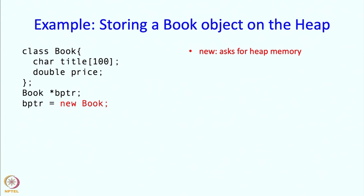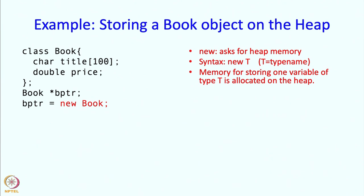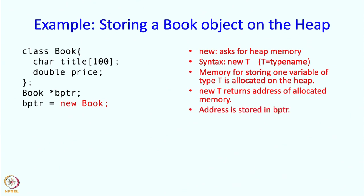new is actually an operator and this operator asks for heap memory. The syntax in general is going to be new followed by the name of a type T. And what this causes is that memory for storing one variable of type T is allocated — reserved on the heap. This statement new T or new book returns the address of the allocated memory.